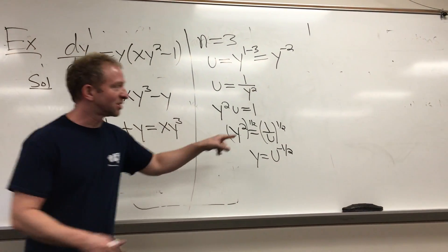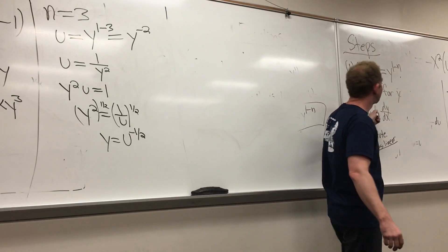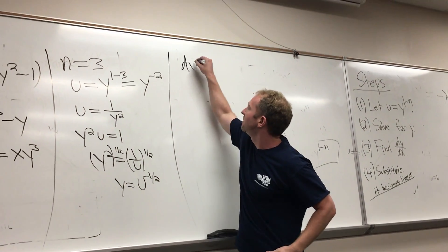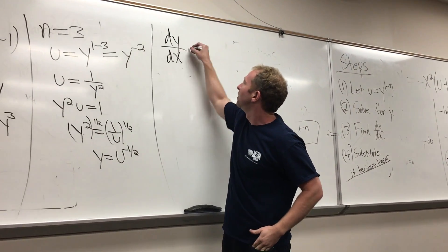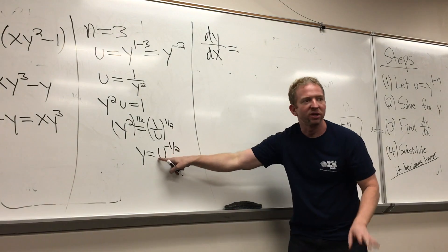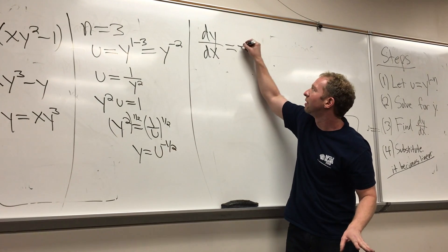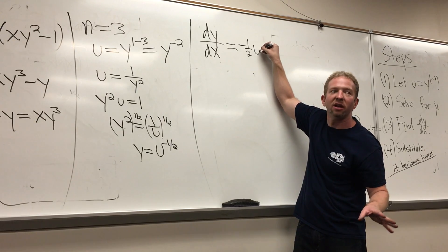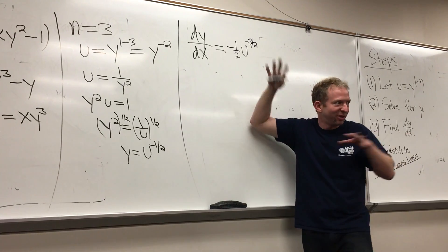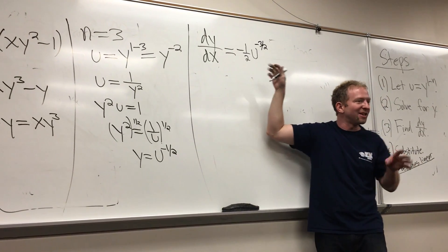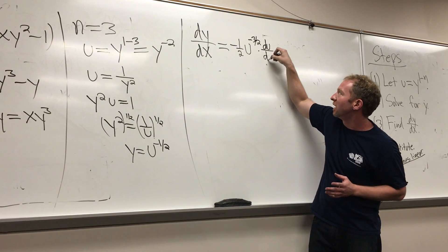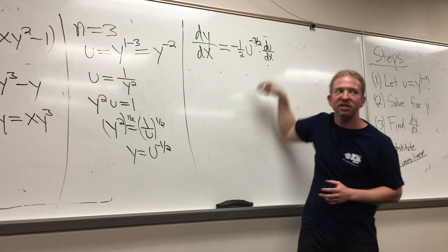Now we have to compute dy/dx. When we're taking a derivative here with respect to x, we bring the negative 1/2 down, so we get negative 1/2, and then times the derivative of the inside, which is simply du/dx. That's a super key step.